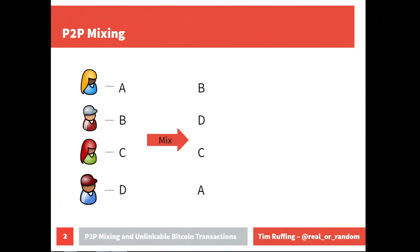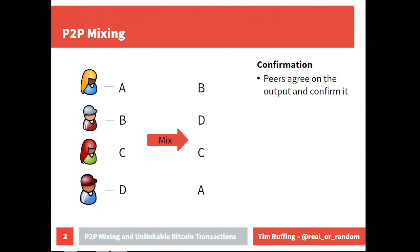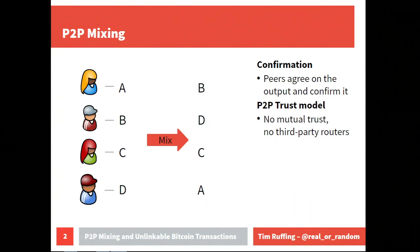The parties also want to confirm this output — they should all agree on this list of messages. The trust model is fully peer-to-peer: there's no other party, the peers don't trust each other, and there's no Tor or onion router to provide anonymity. The peers are just on their own, and of course some of them could be malicious.